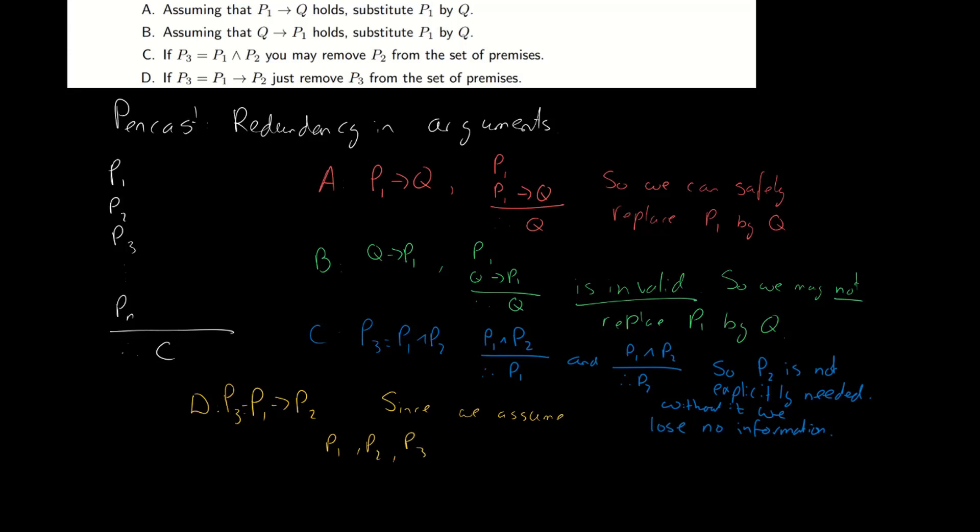So do we really care that if P1 holds then P2 holds as well? We know both were true already. So this implication again adds no new information. So we can indeed safely remove the premise P3 from our set of premises.